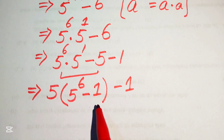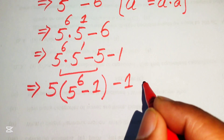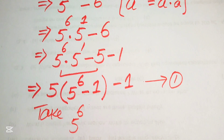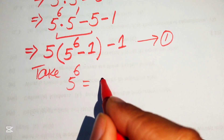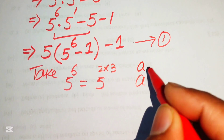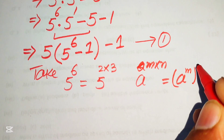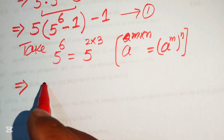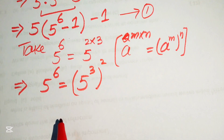Now we need to simplify the terms. To do so, we first find the value of 5 to the power of 6 — we call this equation 1. We write 5 to the power of 6 as 5 to the power of 2 multiplied by 3, then use the exponent law: a to the power of m times n equals a to the power of m to the power of n. According to this law, we write 5 to the power of 6 as 5 cubed, whole squared.